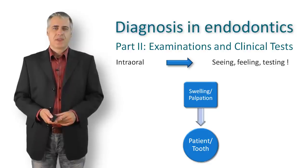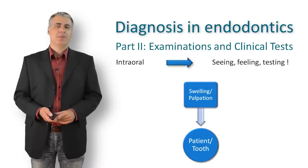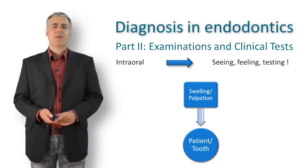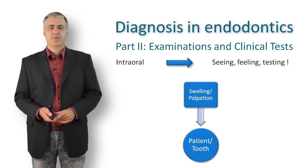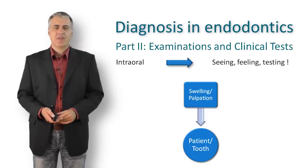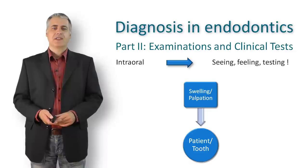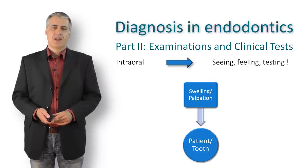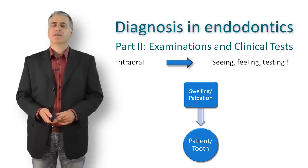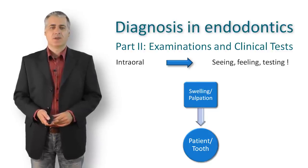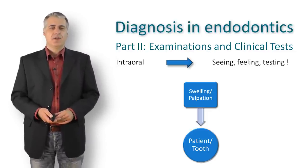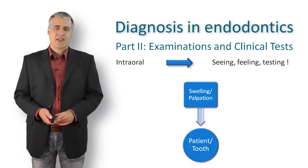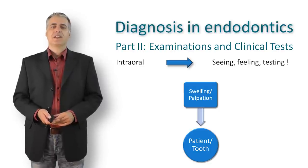An intra-oral swelling is either visible or detectable by palpation, often accompanied by tissue reddening. It must be determined whether the swelling is of endodontic, periodontic, both, or neither origin. The localization gives a clue: in most cases it is of dental origin — a generalized swelling of the gum is more likely a periodontal disease, but a localized one could signal an endodontic problem. For example, an anterior palatal swelling could originate from a lateral incisor or the palatal root of a maxillary first premolar.